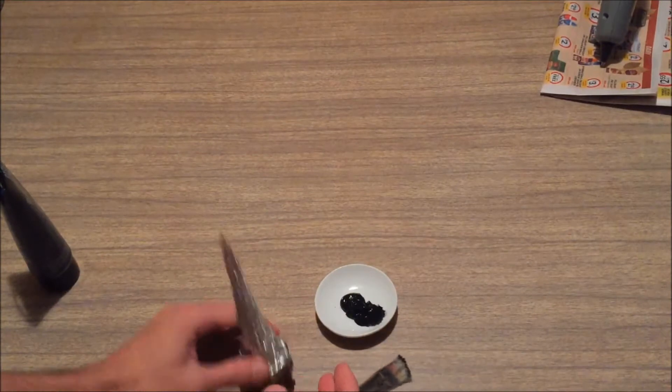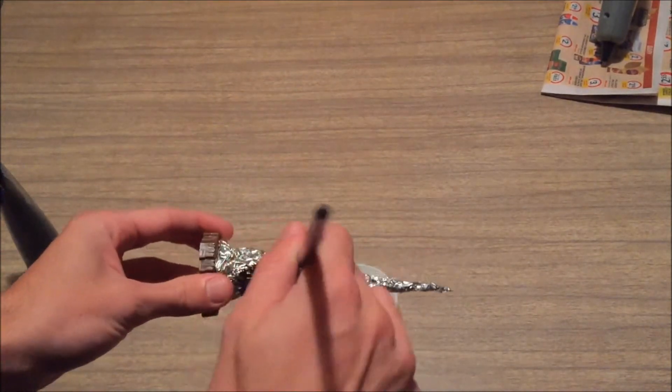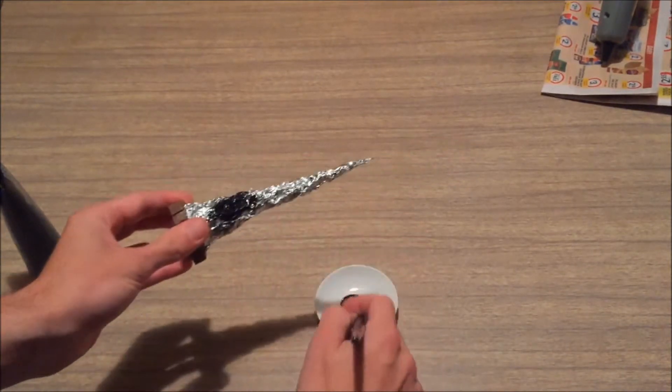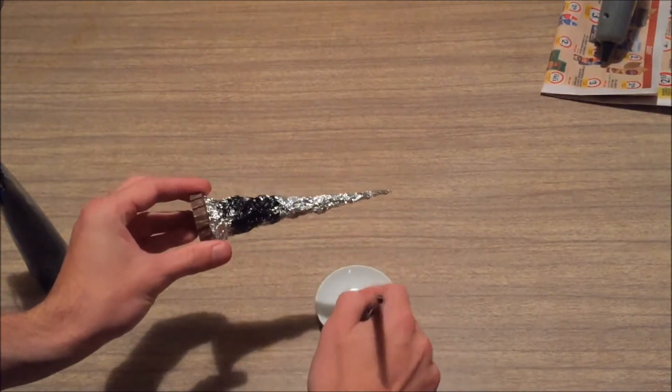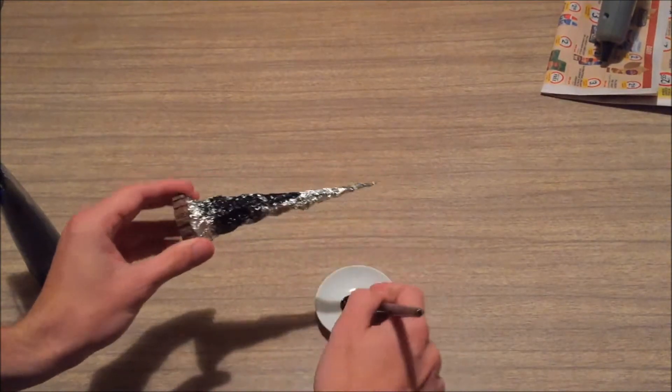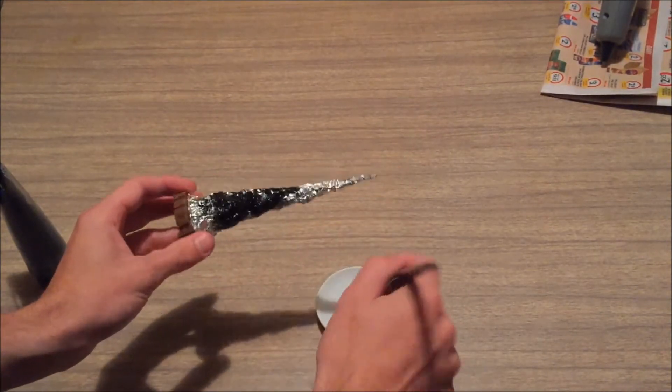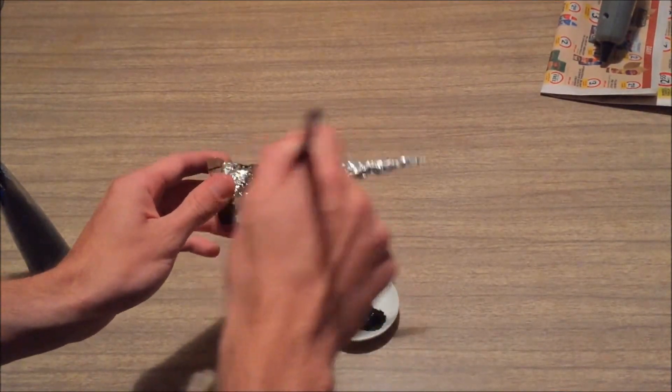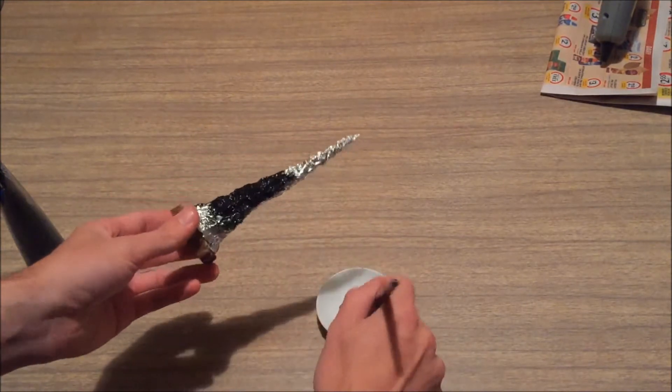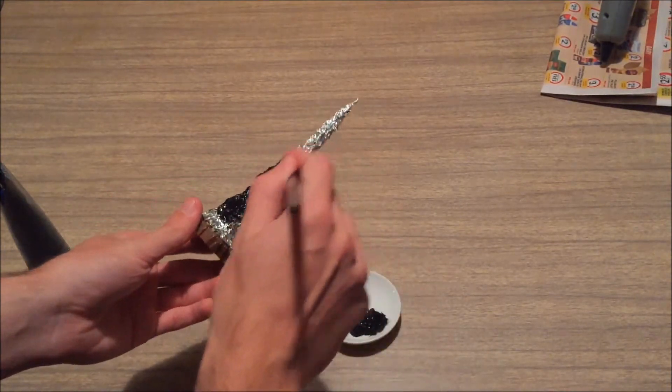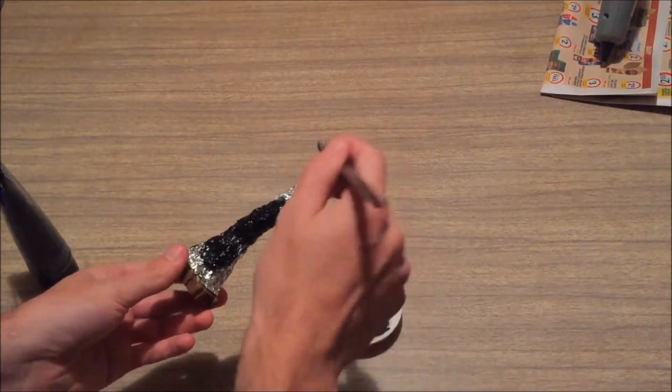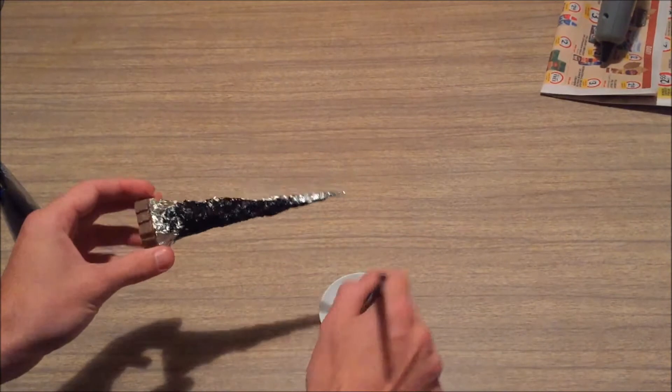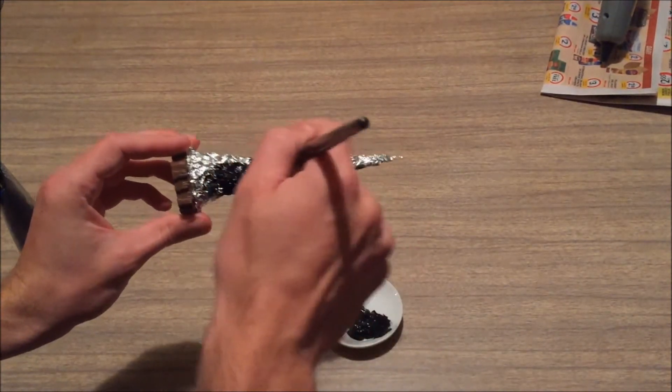Now you don't want to use any water with this unless you're rinsing. Just because you're trying to fill in some of those holes that are left by the aluminum foil itself. You definitely want to be generous with the amount of black you apply.